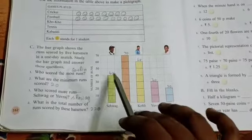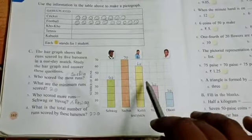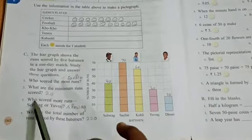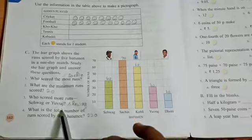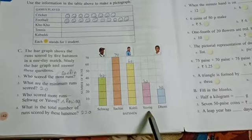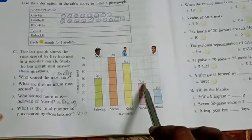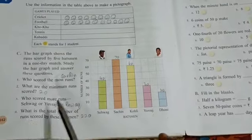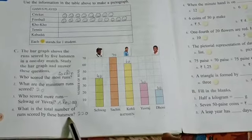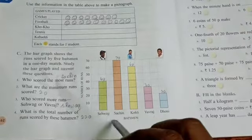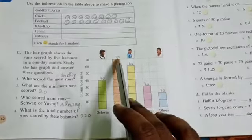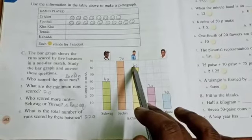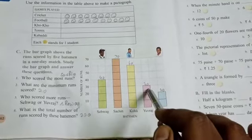What are the minimum runs scored? You will see 70, 60, 30, 20. 20 is the very lowest, so minimum is 20. Who scored more than Sehwag and Yuvraj? Compare Sehwag and Yuvraj - Sehwag has 40, Yuvraj has 30 only, so 40 is the bigger one, so Sehwag. What is the total number of runs scored by these batsmen? Totally how many runs: 40 plus 70 is 110, 110 plus 60 is 170, 170 plus 30 is 200, 200 plus 20 is 220.